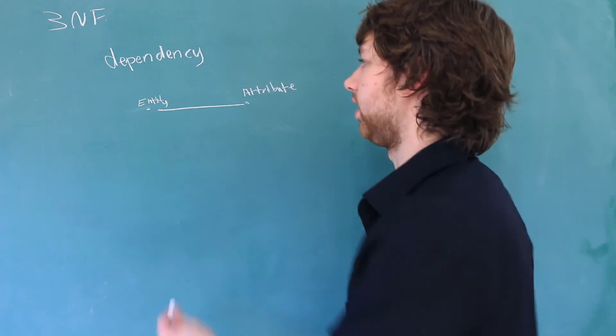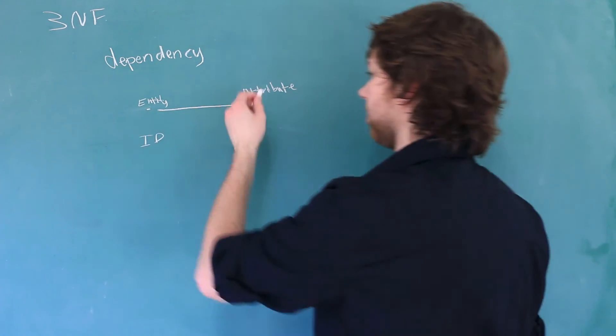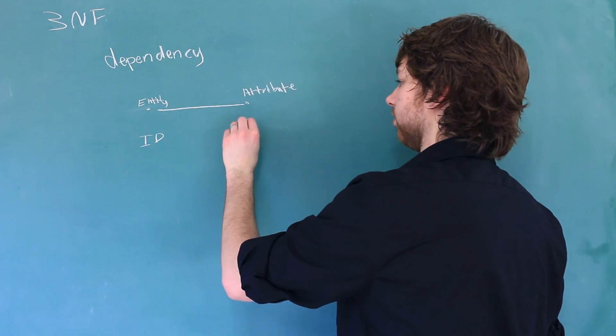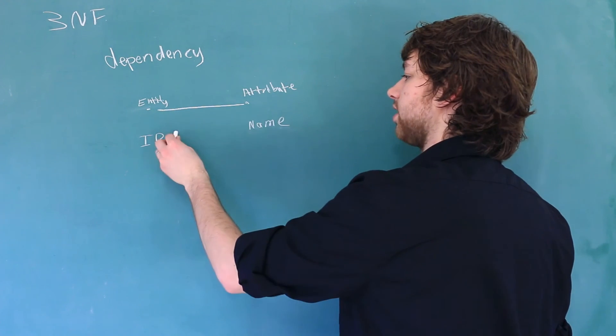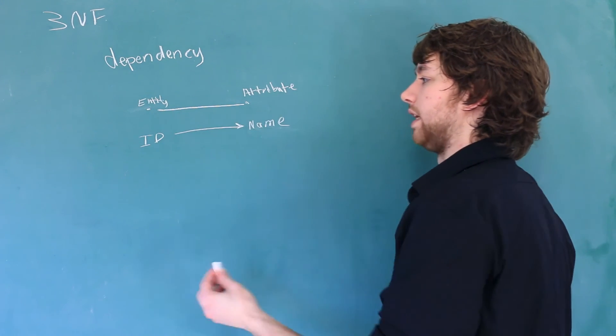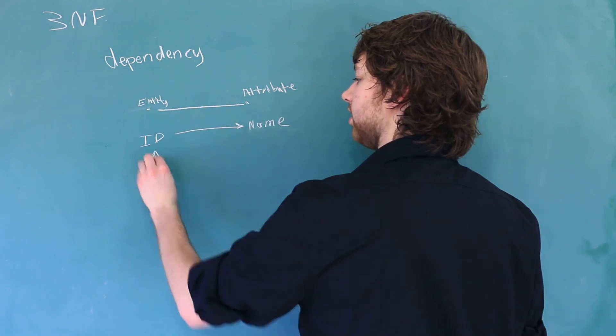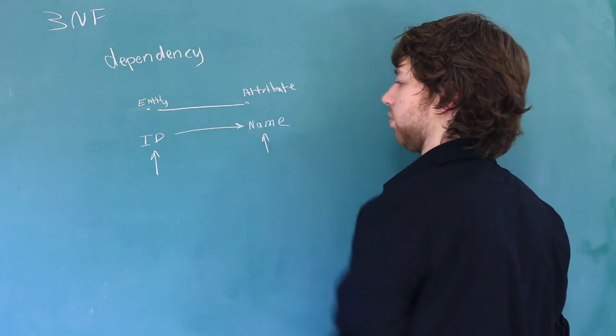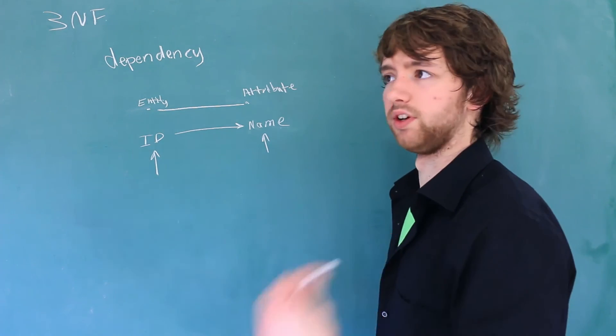So this entity will have a primary key, let's just say it's an ID, and then an attribute of, I don't know, name. You'll often see these dependencies drawn with an arrow like this. Meaning that when you change the ID, the name will change as well. Because it's a different person or a different whatever.